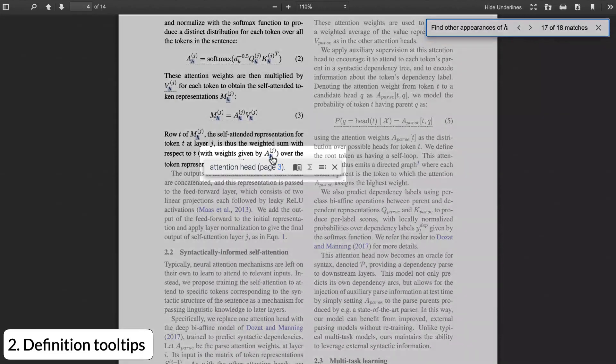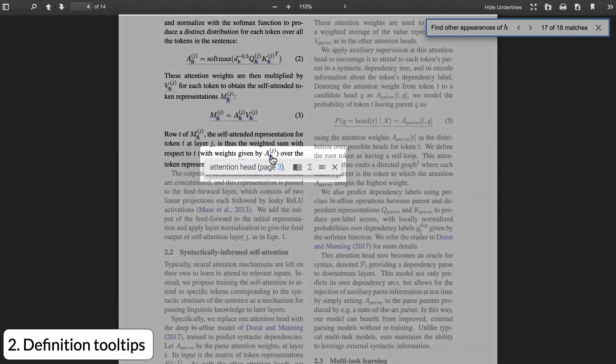Second, it shows compact definitions of terms in tooltips. These definitions are position-sensitive. That is, if the term has been defined differently in multiple passages, the most recent definition of that term is shown.